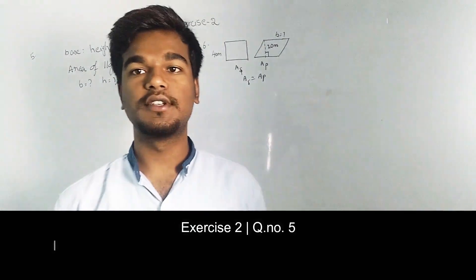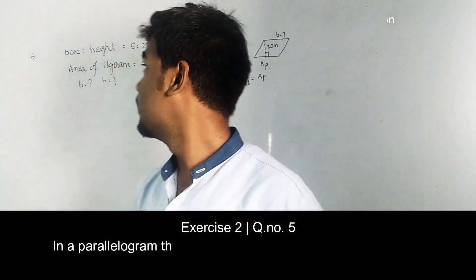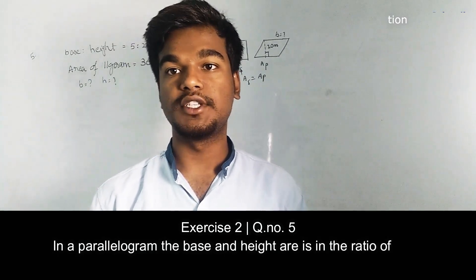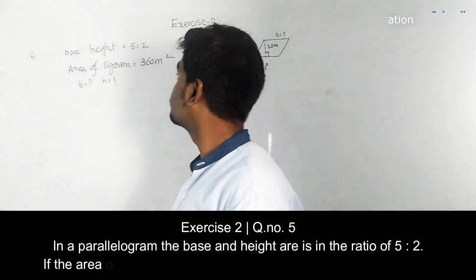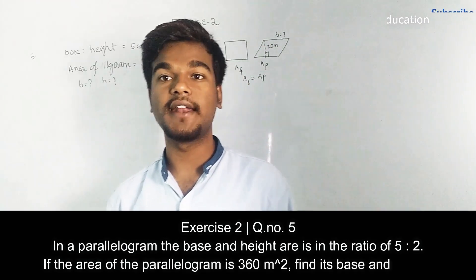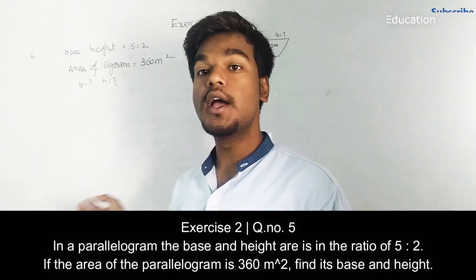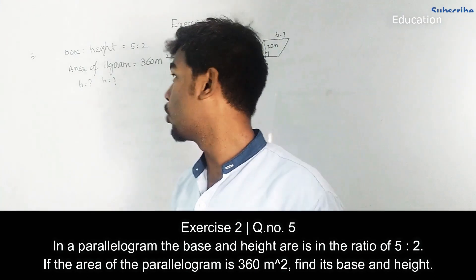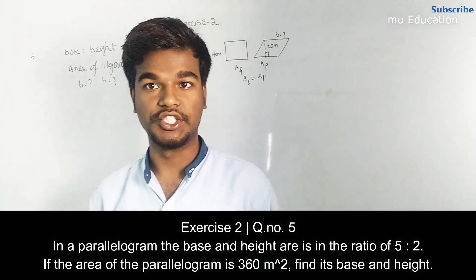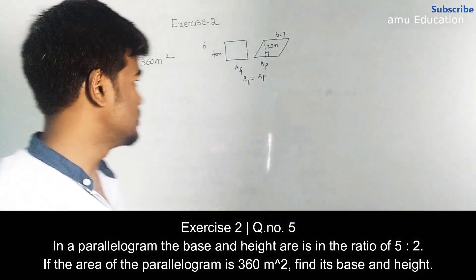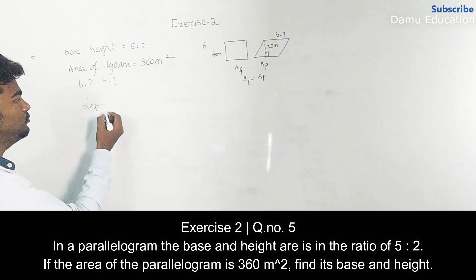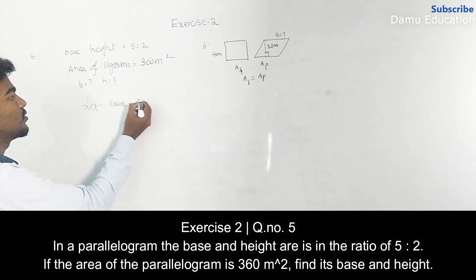In this module we're going to discuss solutions for the fifth and sixth equations in Exercise 2 on area and perimeter. In a given parallelogram, the base and height are in the ratio 5:2, and the area of the parallelogram is 360 square meters. We have to find the base and height. Let base be equal to 5x meters and height be equal to 2x meters.